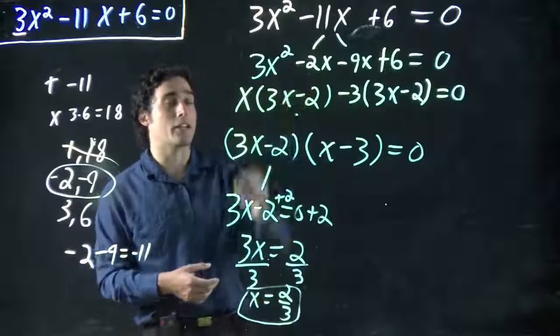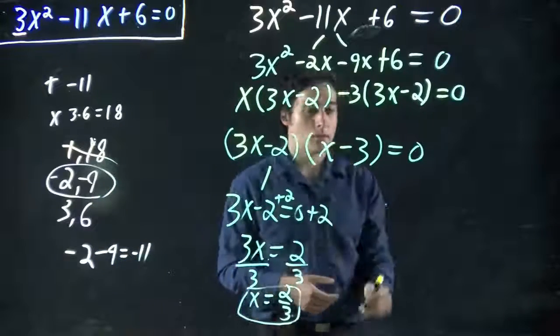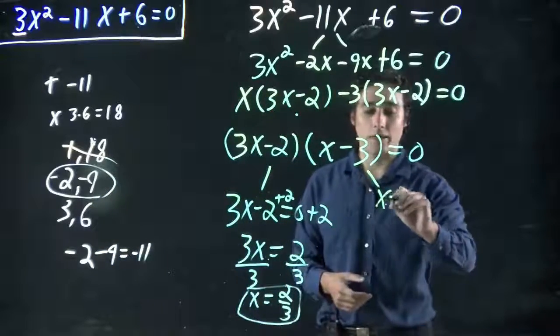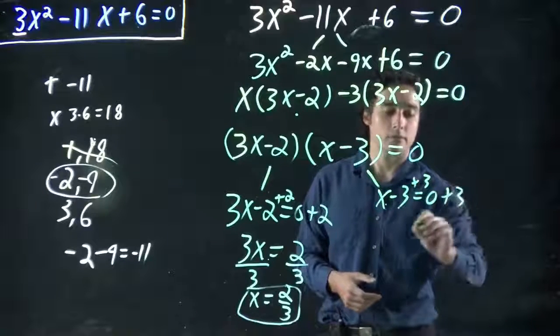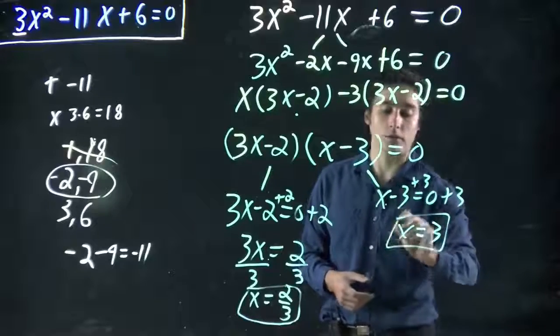As always, if I want to, I can plug that in and check. But my other solution: x - 3 equals 0, plus 3 to both sides, or x equals 3. My other solution.